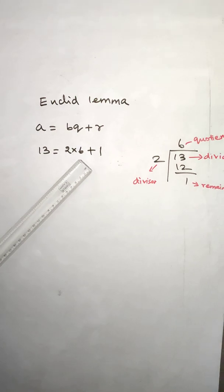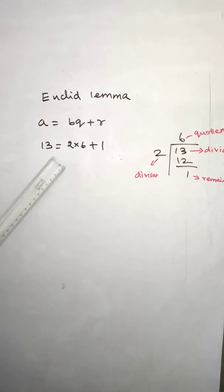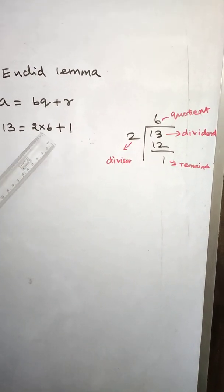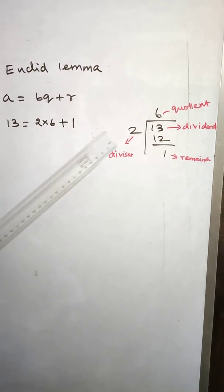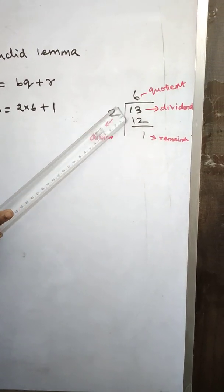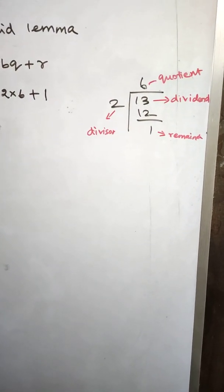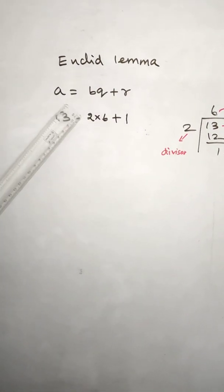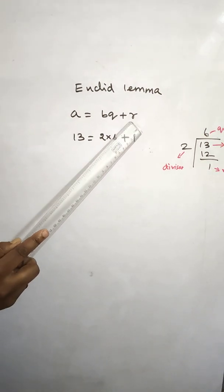So if 13 appears, 2 into 6 is 12, 12 plus 1 is 13. So divisor into quotient plus remainder, divisor 2 into quotient 6 is 12 plus 1. So by Euclid division lemma, a is equal to bq plus r.